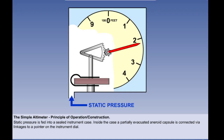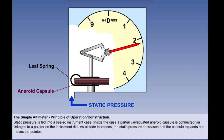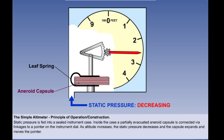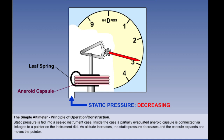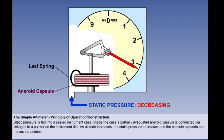Let's look at how the altimeter works. In its simplest form, static pressure is fed into a sealed instrument case from the static source. Inside the instrument case is a partially evacuated capsule or aneroid capsule. Expansion and contraction of the capsule is kept under control by a leaf spring and the controlled movement is transmitted via a system of linkages to the pointer on the instrument dial. As altitude increases, the static pressure inside the instrument case decreases.